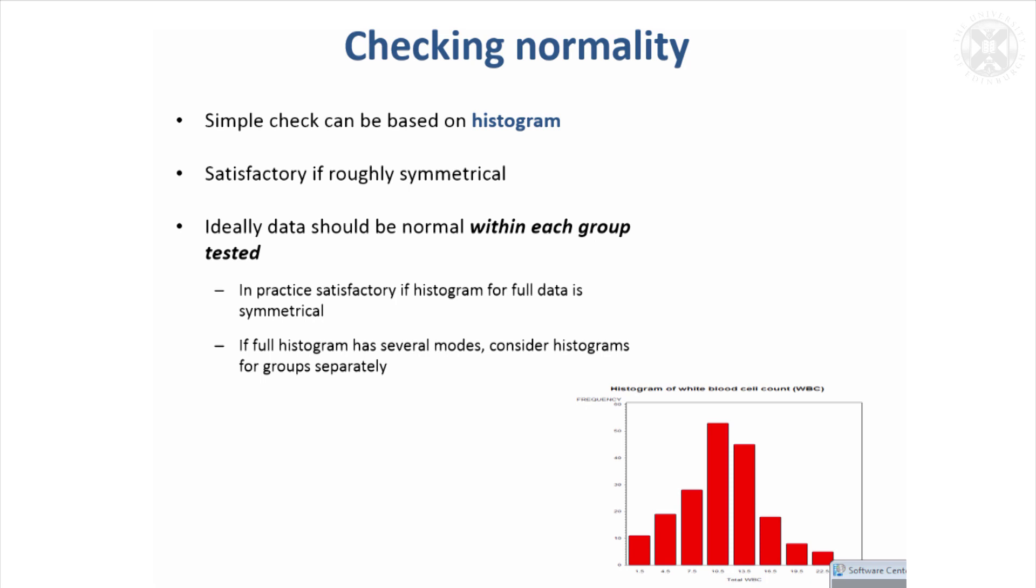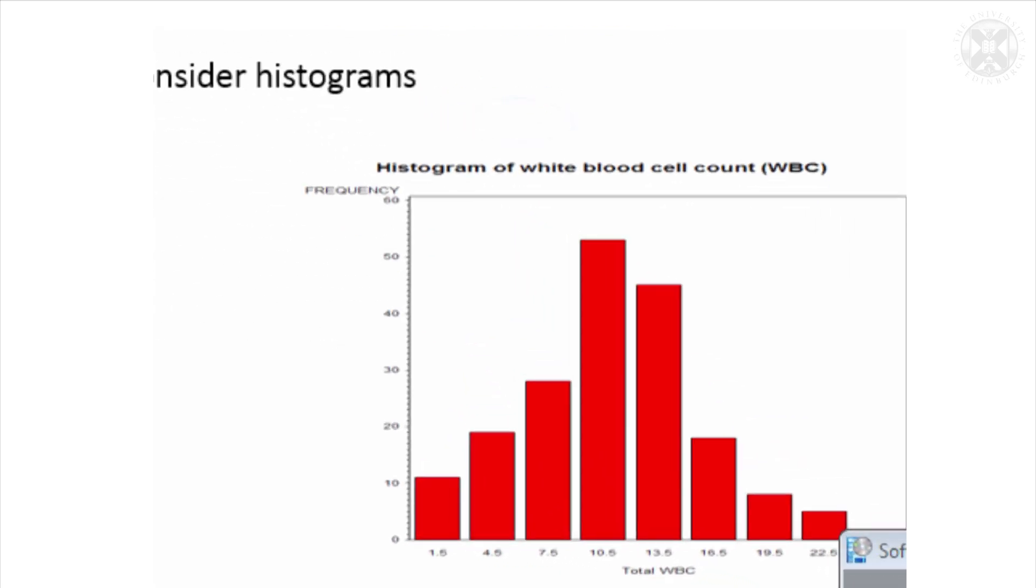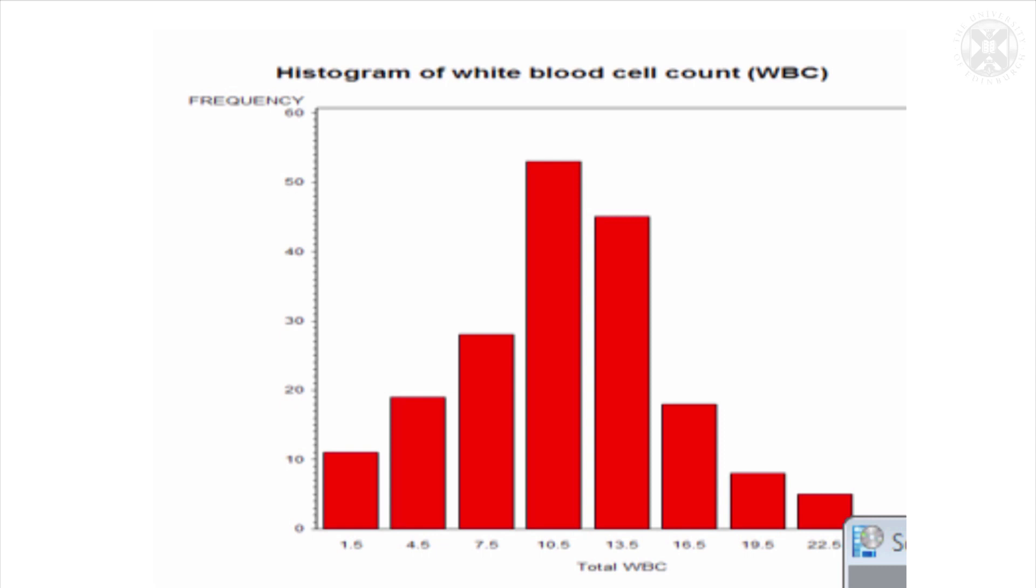Your first question might be: how do I know which sort to use? It's based on normality. You can check normality using a histogram, which is a frequency plot of values at each point in the scale.